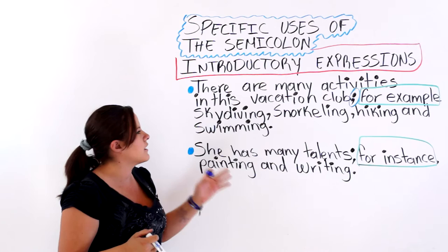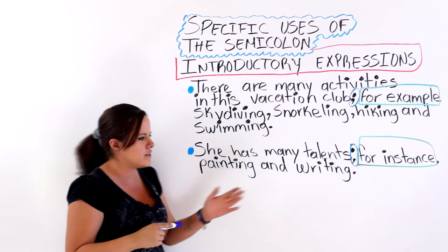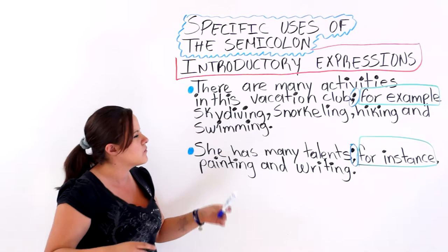The next one says, 'She has many talents.' And then we have a semicolon before the introductory expression: for instance, painting and writing. So this is how you use a semicolon when you have introductory expressions.